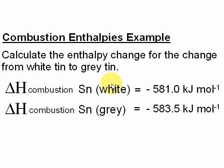The question says: calculate the enthalpy change for the change from white tin to grey tin — two different allotropes of tin. The data given in the question is the combustion enthalpy of white tin and the combustion enthalpy of grey tin. As you can see, the grey tin is very slightly more exothermic than the combustion enthalpy of the white tin.